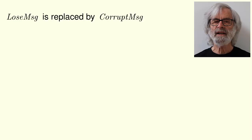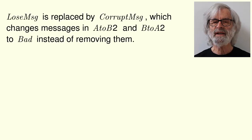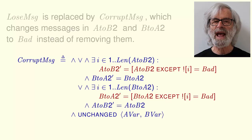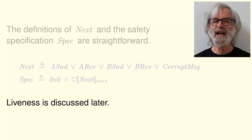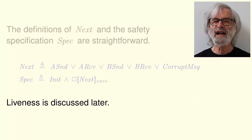The lose message action is replaced by a corrupt message action, which changes messages in AtoB2 and BtoA2 to BAD instead of removing them. This definition is the same as the lose message action except for the parts describing the change to AtoB2 or BtoA2. The definitions of Next and of the safety specification Spec are what you should expect. Liveness will be discussed later.